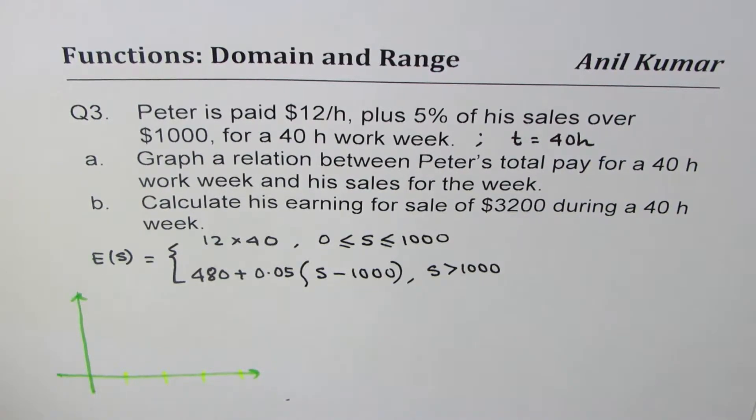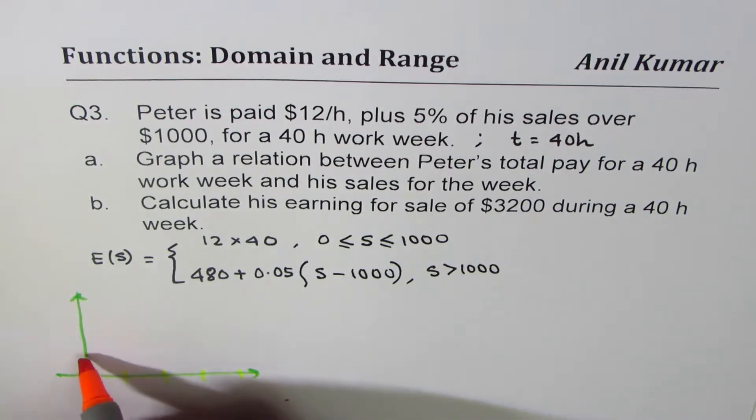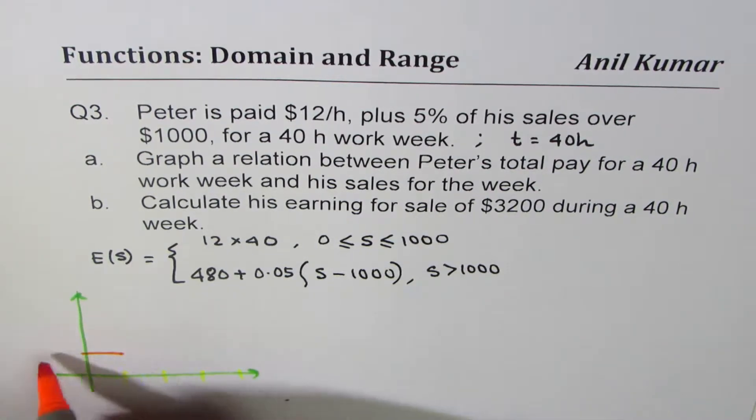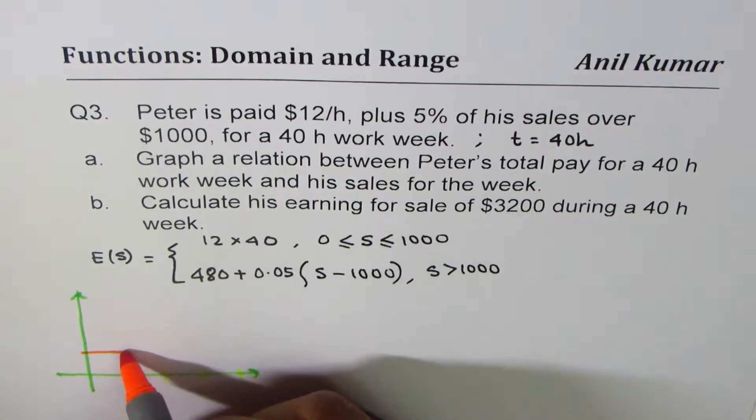Okay, so let's say this is 1000, 2000, 3000 and so on. So the idea here is that for the first thousand the earning is constant, it's 480. This kind of straight horizontal line and then it rises kind of like this.